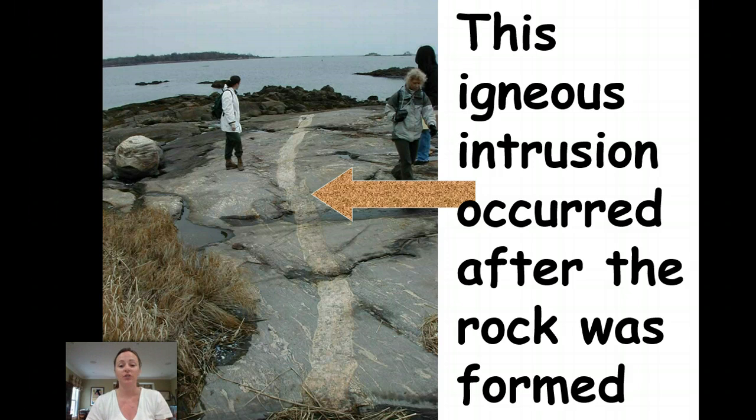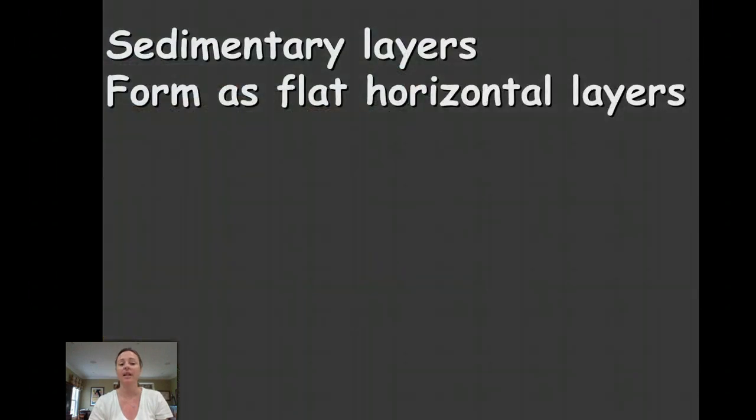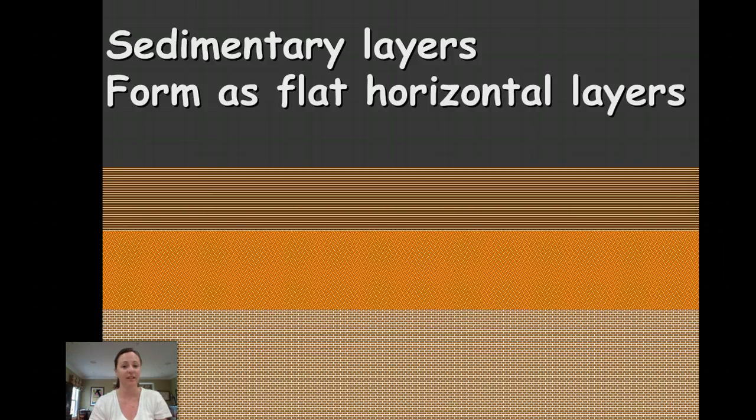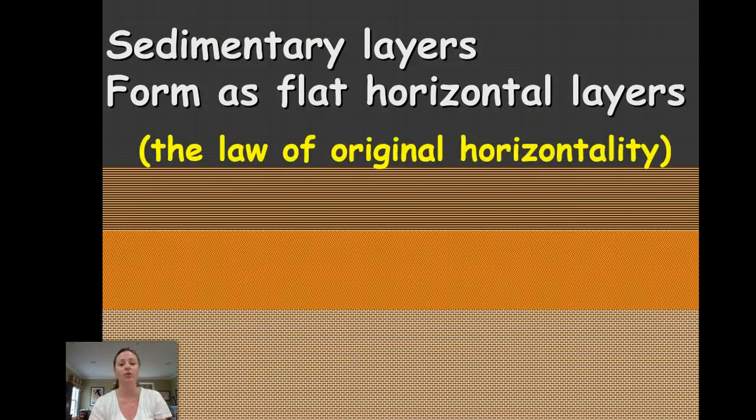This igneous intrusion occurred after the rock had originally formed. Sedimentary layers form as flat horizontal layers and we discussed that in our last screencast which is known as the law of original horizontality.